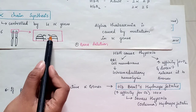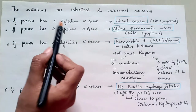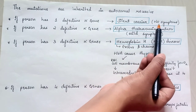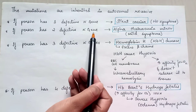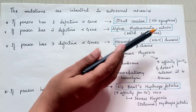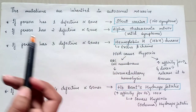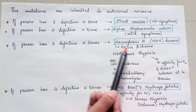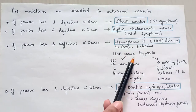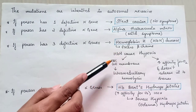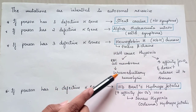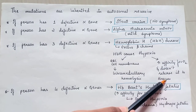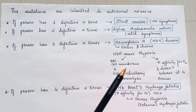As there are 4 alpha genes: if a person has one defective alpha gene, he is considered a silent carrier, meaning the person does not have any symptoms. If a person has 2 defective alpha genes, that person is considered to have alpha thalassemia minor, meaning they might have mild symptoms. If a person has 3 defective alpha genes, hemoglobin H disease can be seen, in which there is excessive beta chain accumulation causing hypoxia. Due to hypoxia, red cell membrane damage occurs leading to intramedullary hemolysis. Hypoxia is also due to increased oxygen affinity that doesn't release oxygen to the tissues.